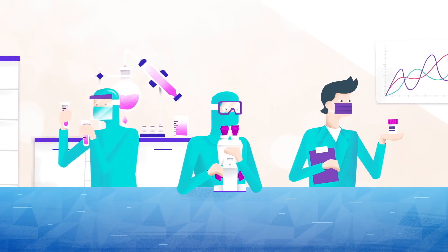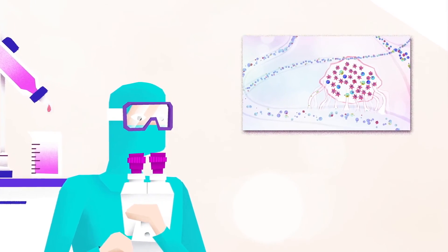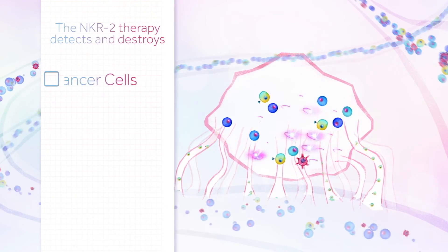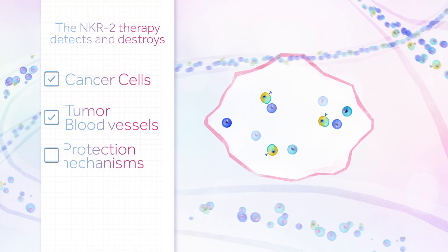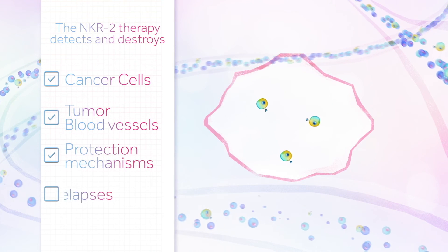Preclinical studies have also demonstrated that NKG2D ligands are not only expressed by tumor cells, but also by blood vessels that feed the tumor, and by the cells that collaborate and protect the cancer cells from the immune system.